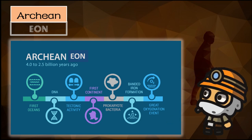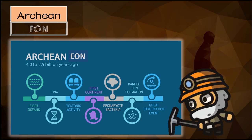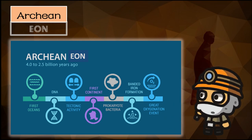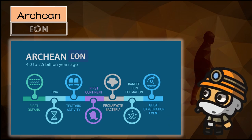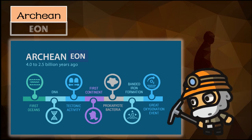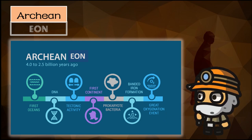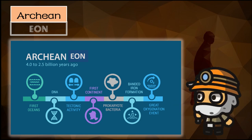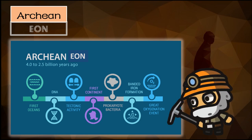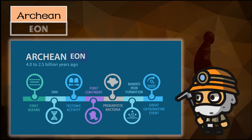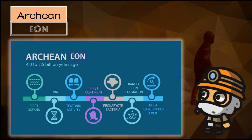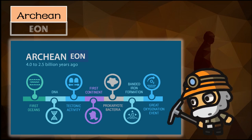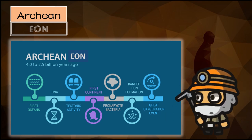We move on to the next aeon. The earliest known life forms are found in rocks dating from the Archean aeon. All the oldest rocks known on Earth were deposited during this aeon. The Archean aeon is also referred to as the Archeozoic aeon. Sedimentary rocks deposited in the oceans during the Archean aeon contain microscopic life forms. These organisms were among the only living things on Earth for over 1 billion years.